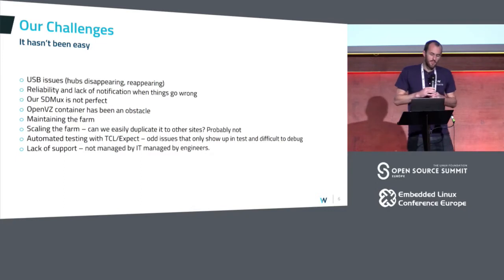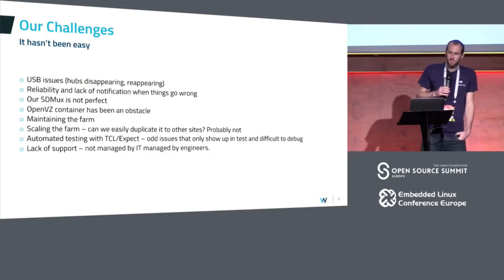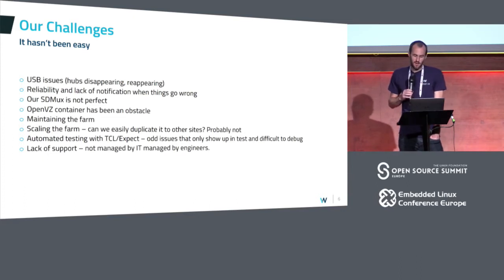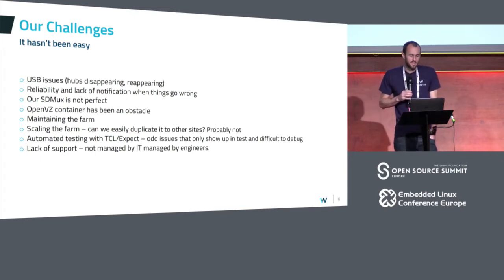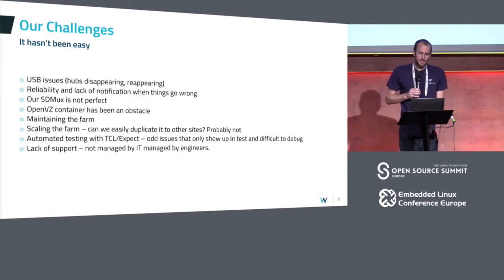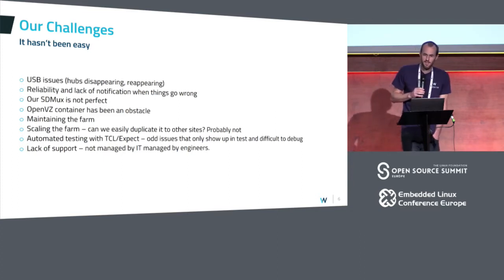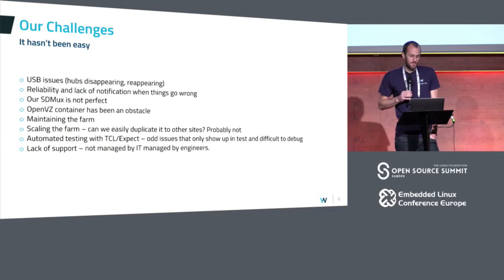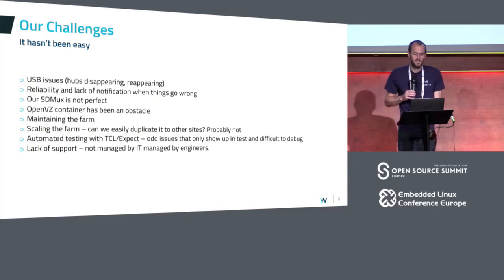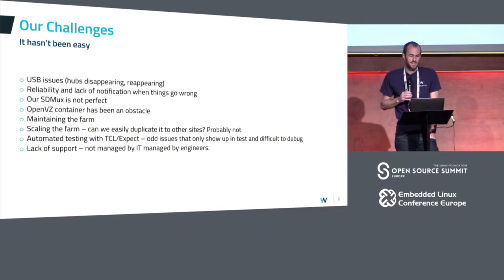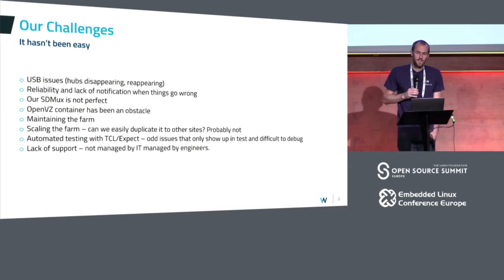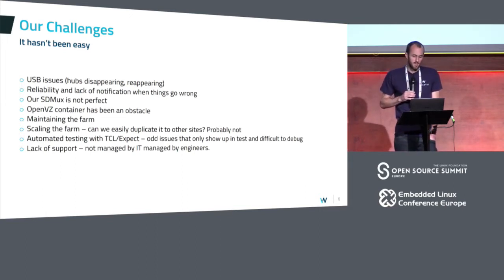This hasn't been easy. If you've played with farms, you'll be familiar with some of these issues. USB is a real challenge - farms seem to be quite a good test for USB. Hubs disappear, USB-to-serial adapters disappear, and they come back with slightly different major-minor numbers, which confuses things especially if you're running a long test. Reliability is the biggest challenge. It's easy to make a test and do this stuff, but to keep doing it consistently and reliably is difficult, especially as you try to scale the farm.